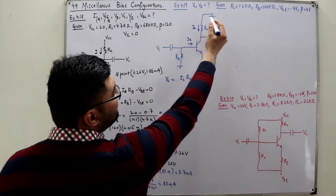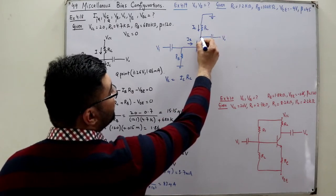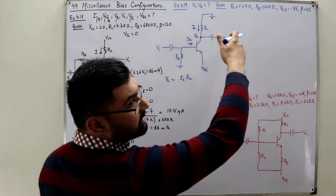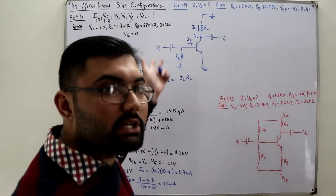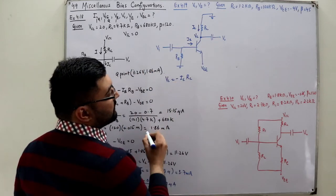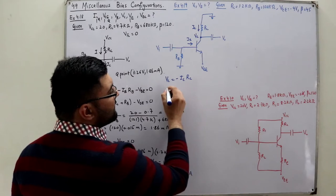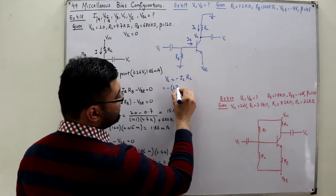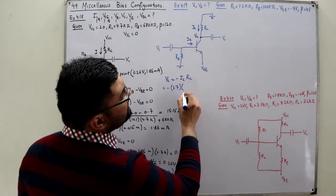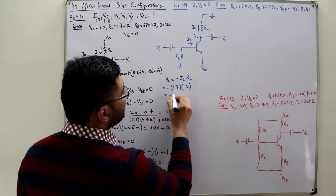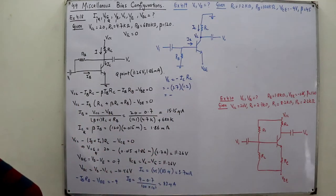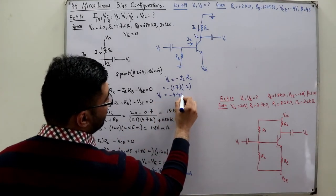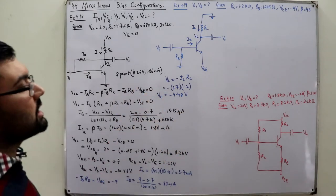The current direction is flowing downward, but VC is the potential at the collector point measured to ground — we're going in the opposite direction to the current, so we put a negative sign. VC = negative IC × RC = negative 3.7 mA × 1.2kΩ = negative 4.48 volts.